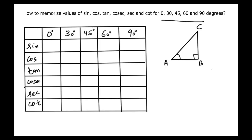In this video we will learn how to memorize the values of sine, cosine, tangent, cosecant, secant, and cotangent for 0 degrees, 30 degrees, 45 degrees, 60 degrees, and 90 degrees. Our task is to fill in this table.